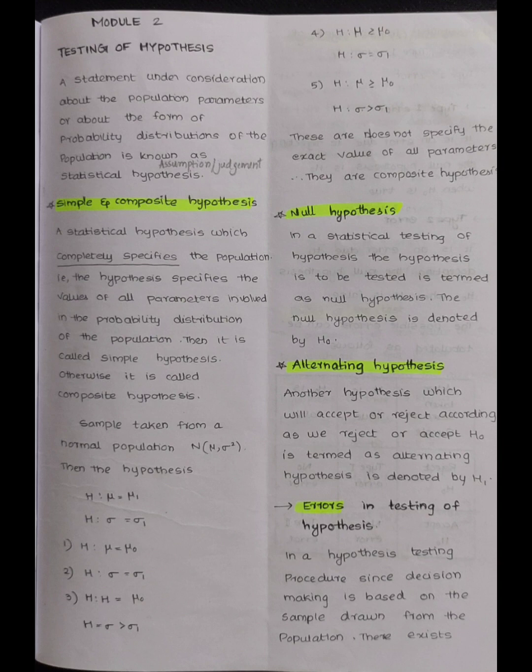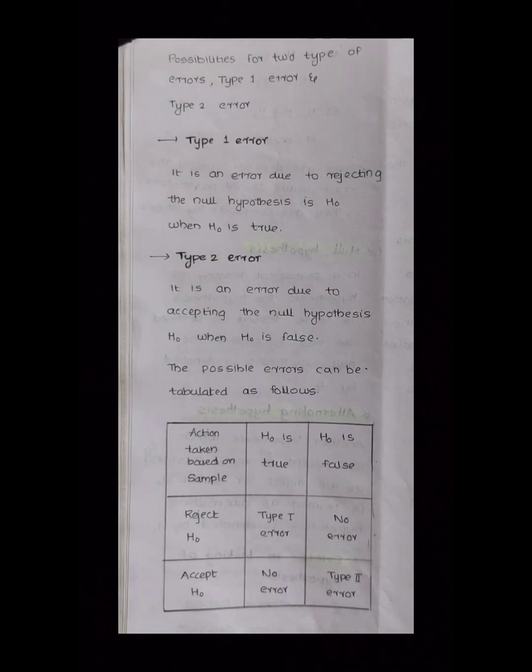A composite hypothesis is one that does not completely specify the population. We also have null hypothesis and alternative hypothesis. In testing of hypothesis, we encounter errors: Type 1 error, Type 2 error, and we learn about size and power of test, and the probability of each type of error.